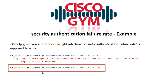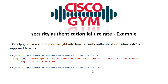The full configuration command is 'security authentication failure rate' followed by the threshold rate you specified, plus the 'log' keyword. If you hit enter without 'log' at this point it's going to give you an incomplete command error. We'll look at this on the CLI in just a minute.